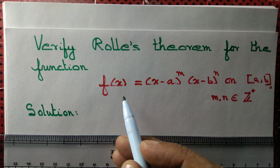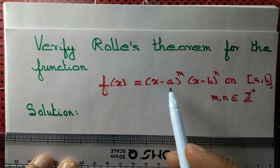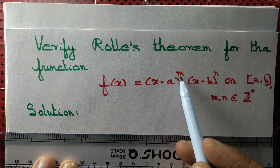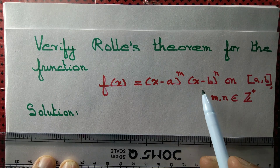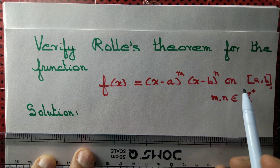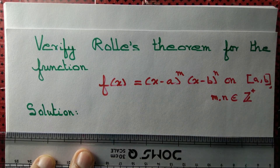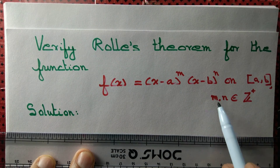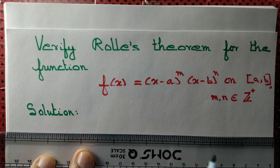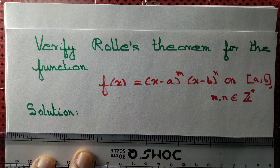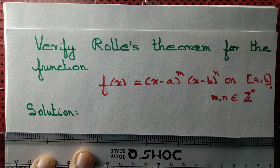We are given a function f(x) equal to (x minus a) to the power m, multiplied by (x minus b) to the power n, on the interval [a, b], where m and n are positive integers. We want to verify Rolle's theorem for such a function.